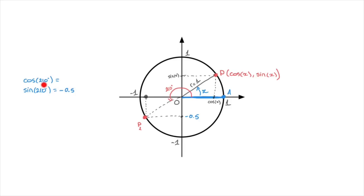Cosine of 210 degrees, on the other hand, is the horizontal coordinate of this point. Using a calculator, you'll find that is roughly equal to negative 0.87, rounding to two decimal places. And that's all that the cosine and sine functions actually are — they're just functions which give us the coordinates of a point moving around this unit circle.